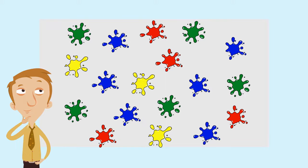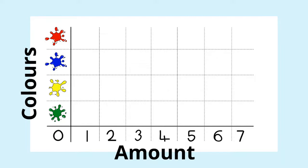Draw a pictogram grid like this. The colors go down one side of the grid and the numbers go along the other side. Now we can fill in the pictogram with the raw data we have. Can you remember how many green splats there were?